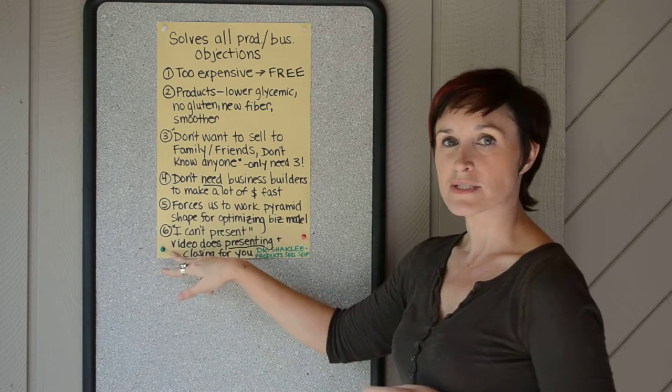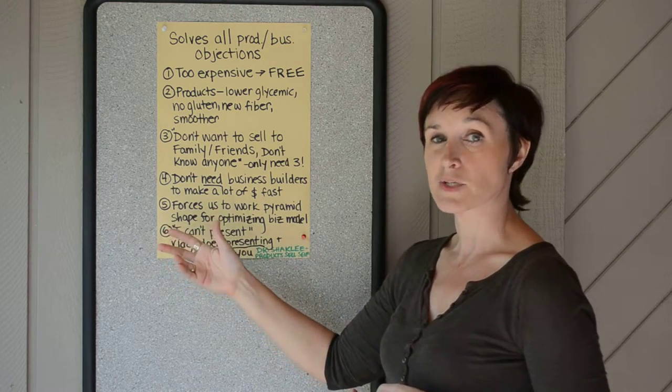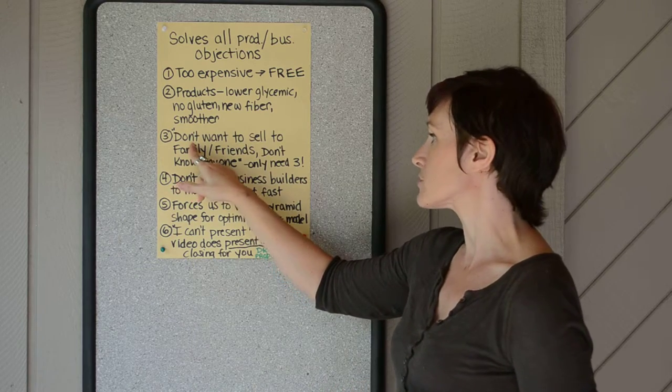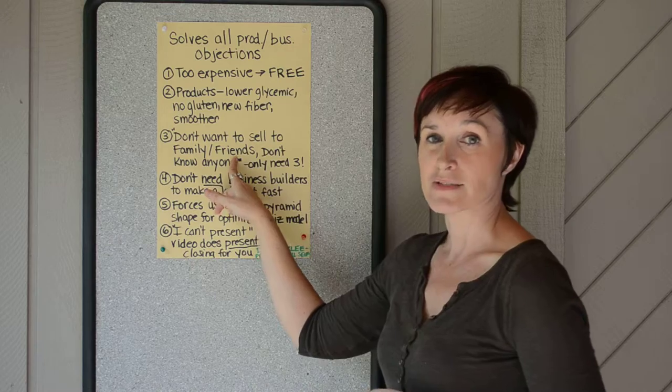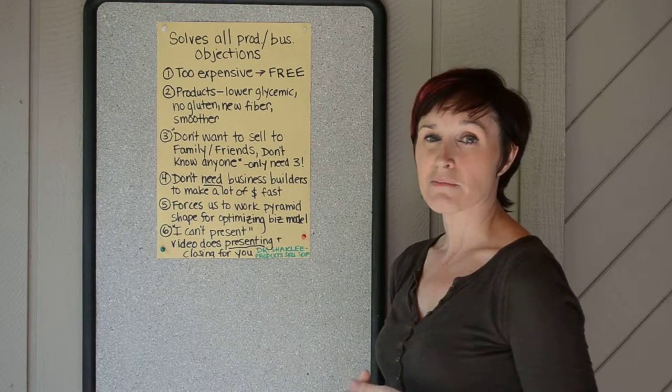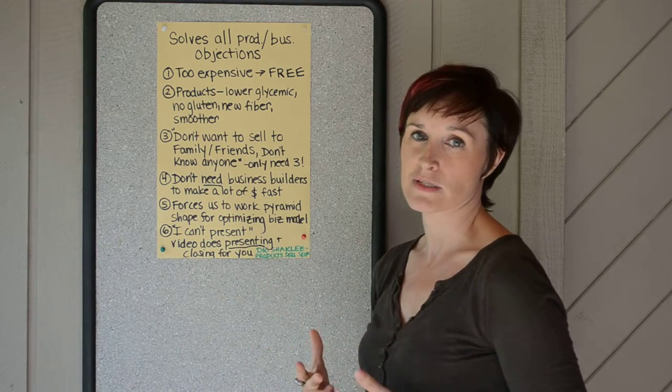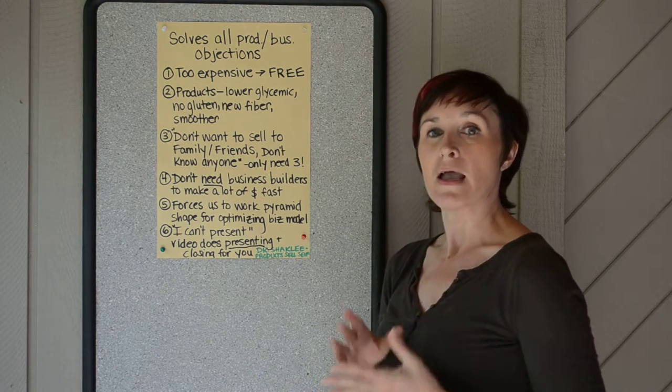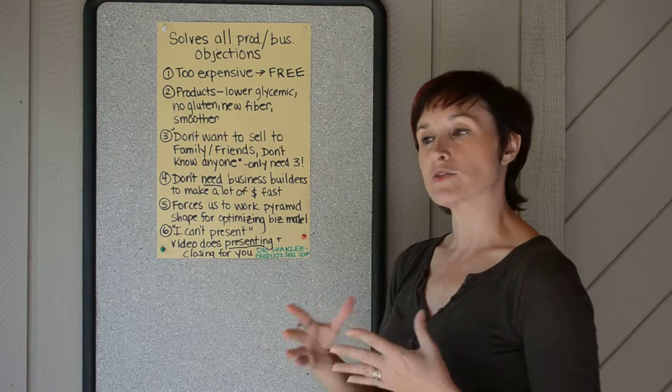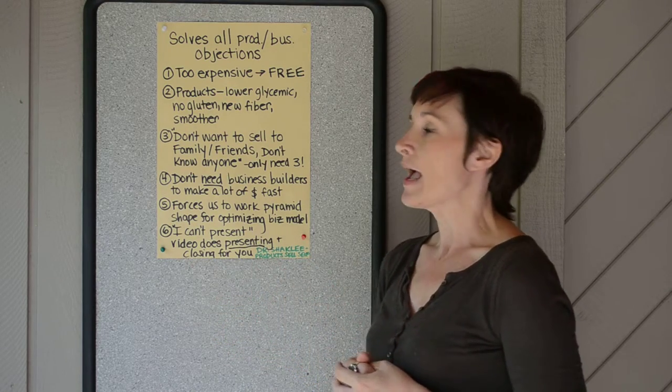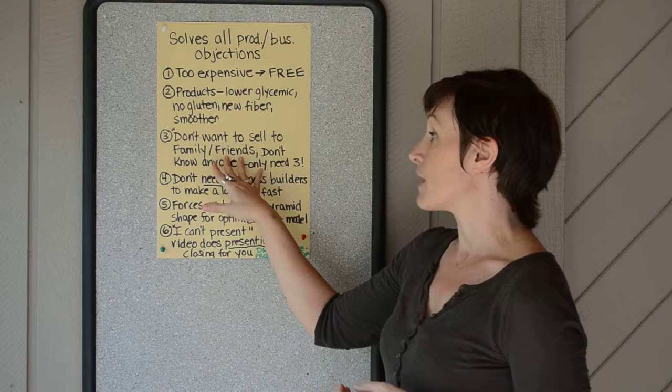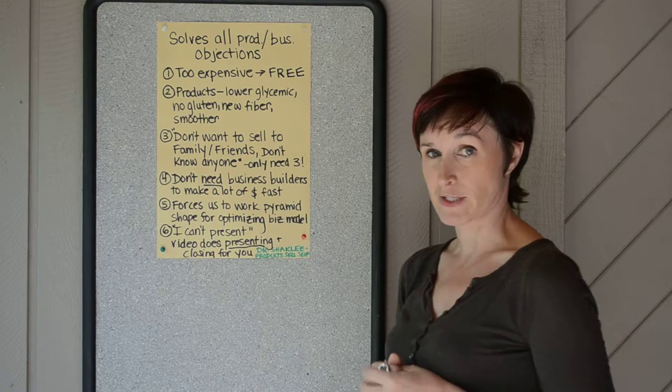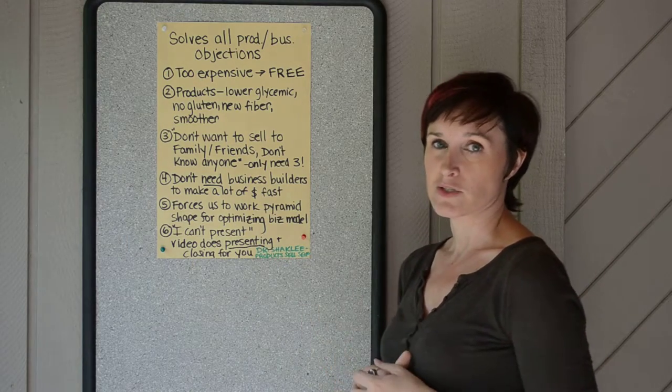Numbers three through six deal with more business objections. And this one I hear a lot, and I had the same concern when I was first starting out. I don't want to sell to my family and friends. I've actually changed my mind on that one, because I've realized how much these products can save lives. And I want my family and friends to be on them. However, in the beginning, you don't want to feel like they're doing you a favor. And this solves the problem, because you only need to know three people. And everyone else on that board is probably strangers to you. So, it legitimizes your business.